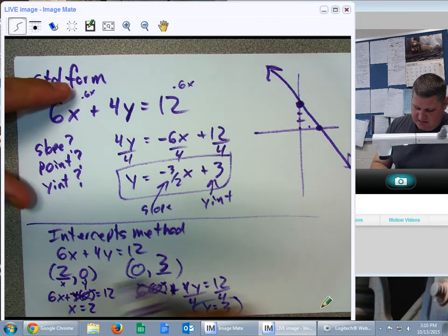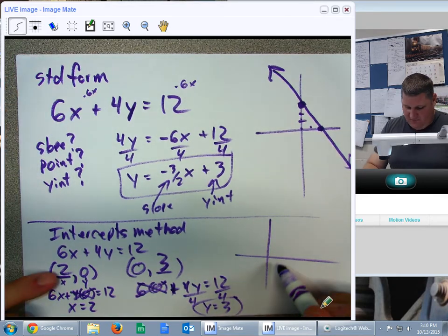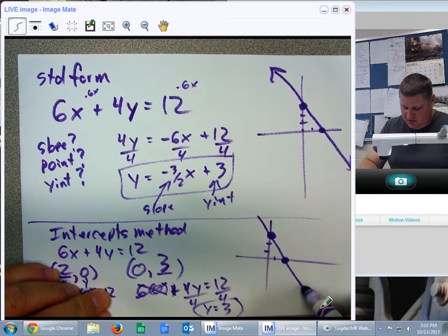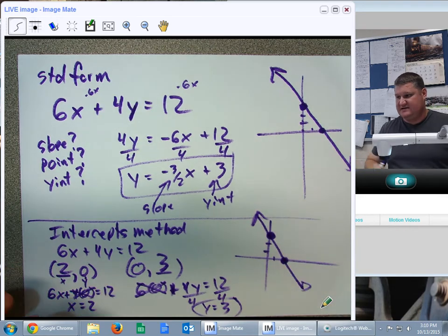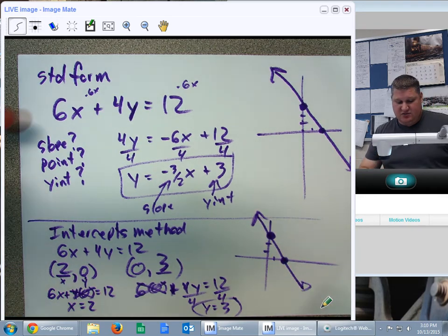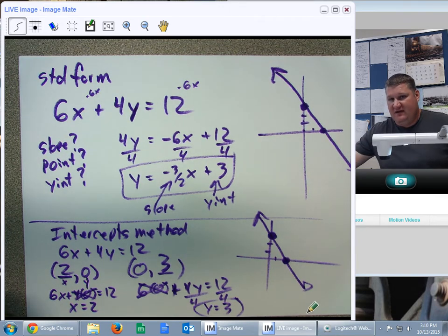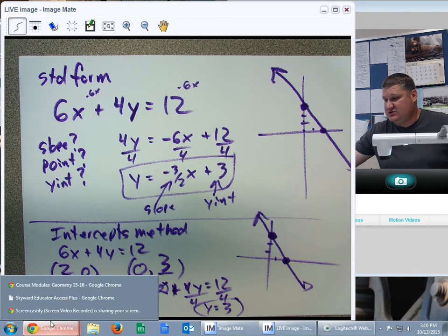And so, I get this. At this point, I can graph 1, 2, or 1, 2, 3. There we go. And draw the line. You'll notice it should be the exact same line, because I used standard form and the intercepts method to graph. So, that's an introduction. We're going to talk about some specific methods here in just a minute.